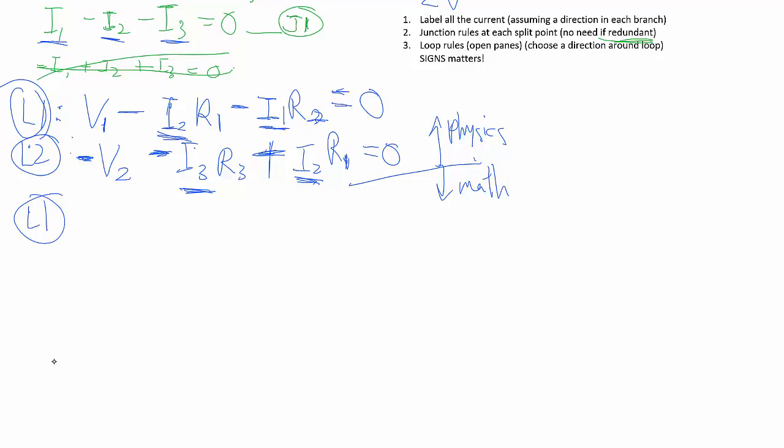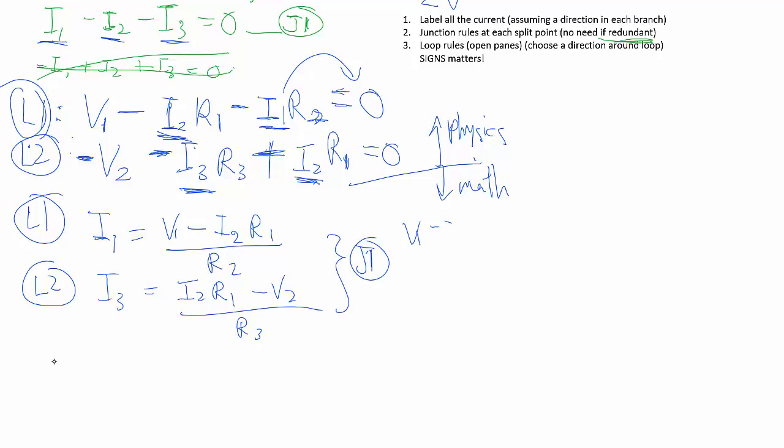So from the L1 equation, we're going to use that to solve for I1. So we'll pop this over to the other side and divide by R2 to get us that. Then from the L2 equation, we're going to solve for I3 similarly, and we'll get that. So then putting these back into the J1 equation, we'll get that. And now the only unknown is I2.